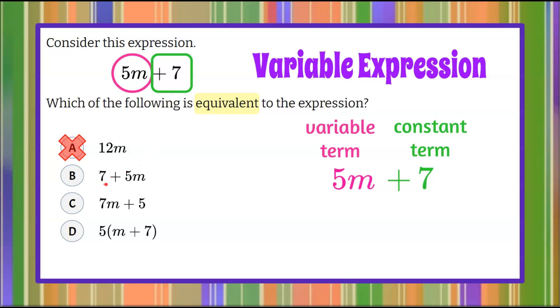Over here we can see that 7 plus 5m possibly, and over here we see 7m plus 5. We can see our variable term is different and then let's distribute in answer choice D to compare.